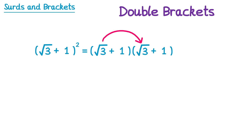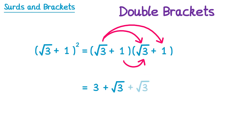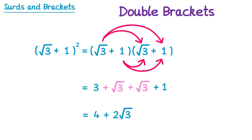We do square root 3 times square root 3, that's 3. Square root 3 times 1, that's square root 3. 1 times square root 3, that's also square root 3. And then 1 times 1, which is 1. You can see this has extra terms compared to the incorrect example. We can simplify: 3 plus 1 gives 4, and square root 3 plus square root 3 gives 2 root 3. So the correct answer is 4 plus 2 root 3.